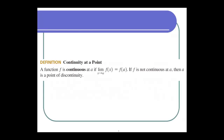So what is the definition of continuity? Continuity at a point: a function is continuous at a if, as you come to that point from one side and from the other side, the limit has to equal f(a). If f is not continuous at a, then a is a point of discontinuity.